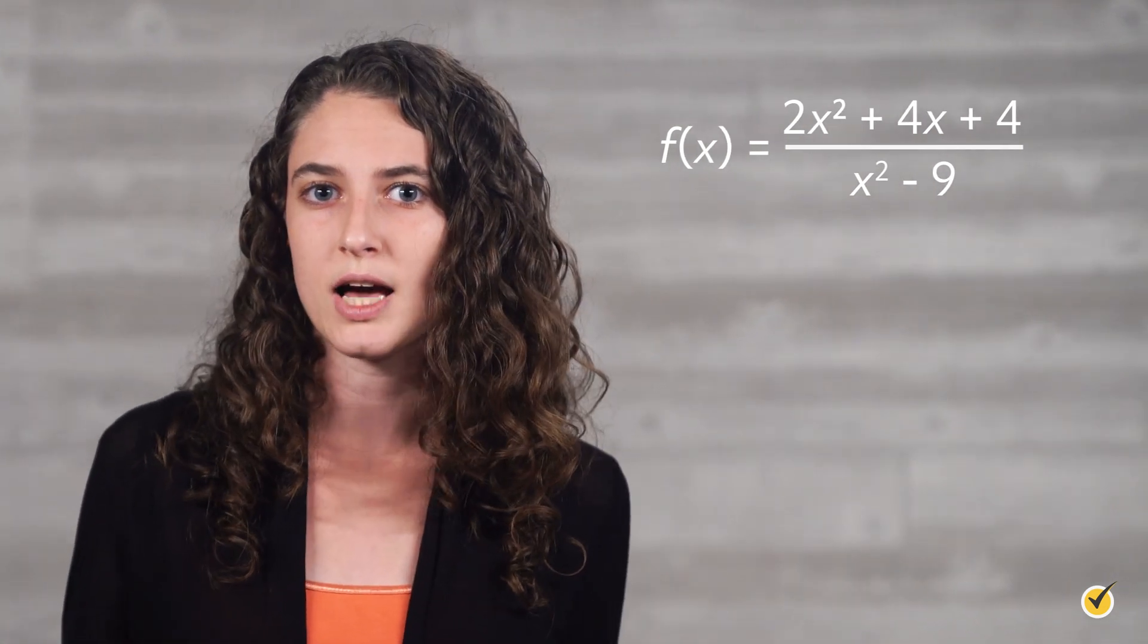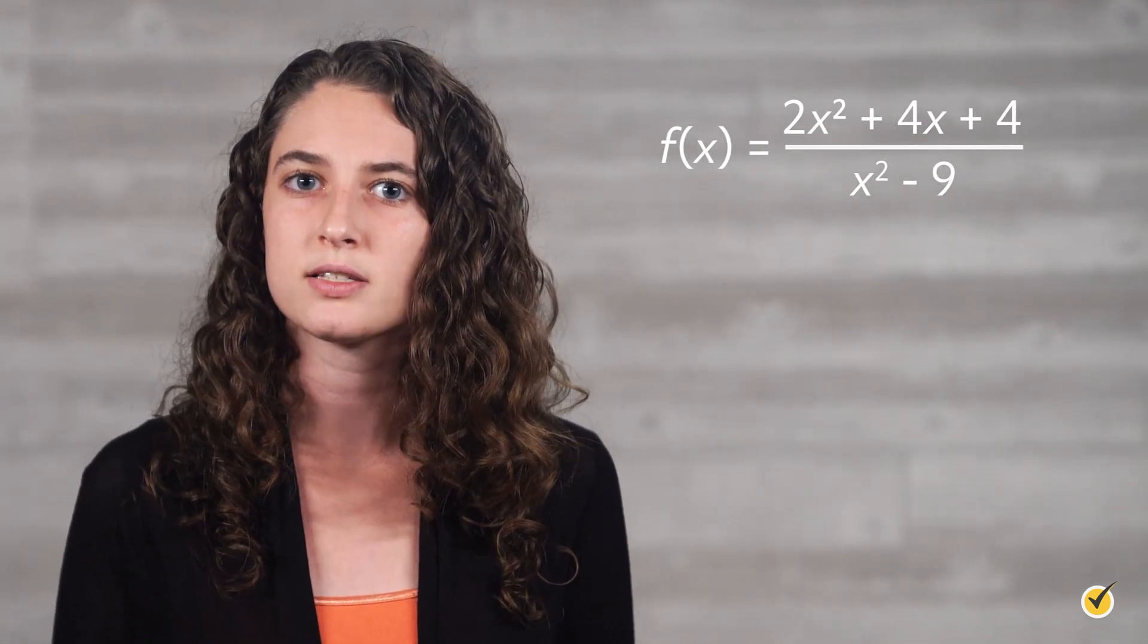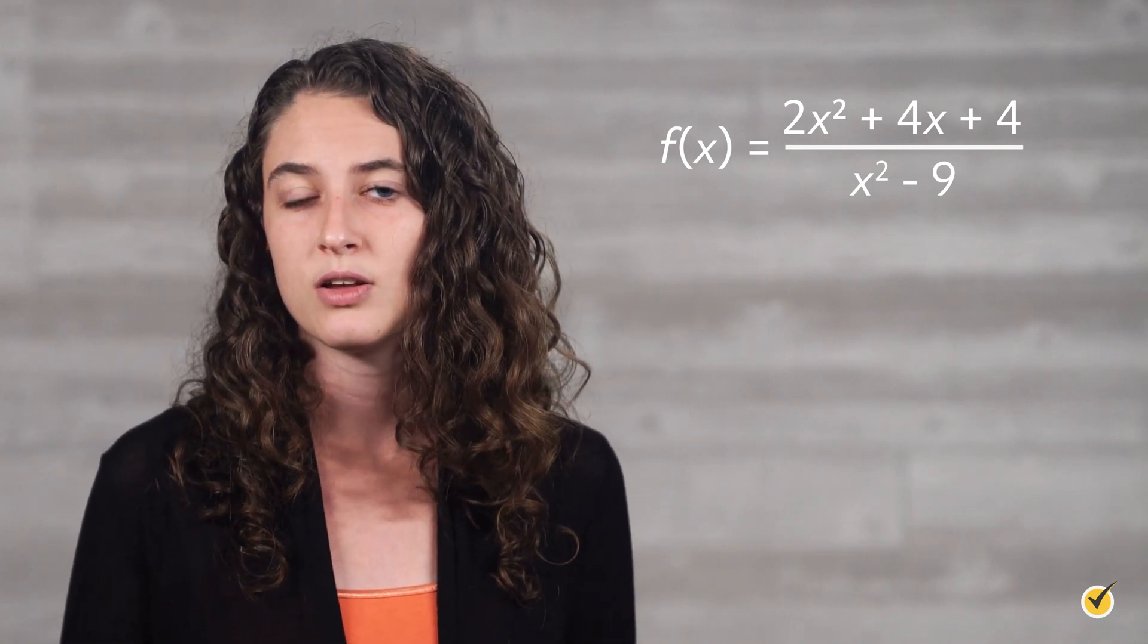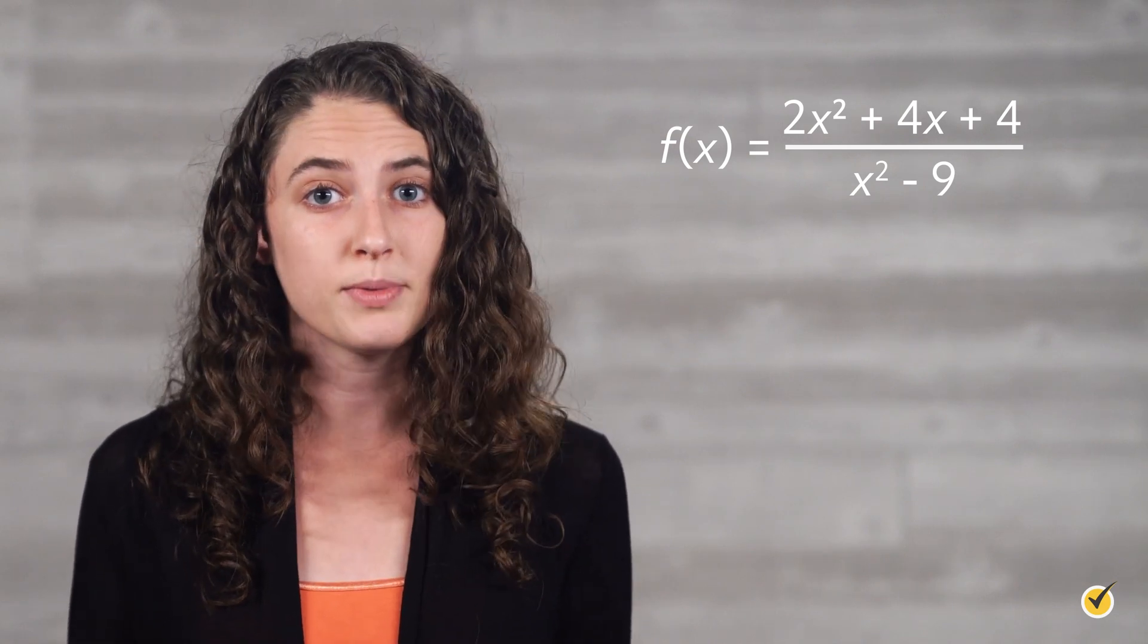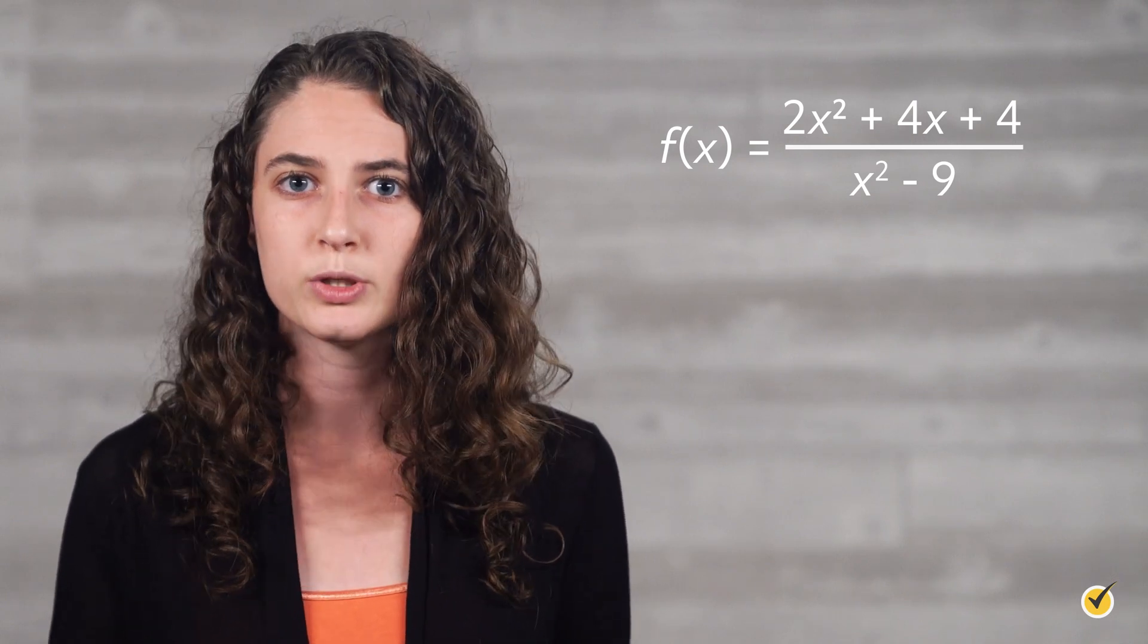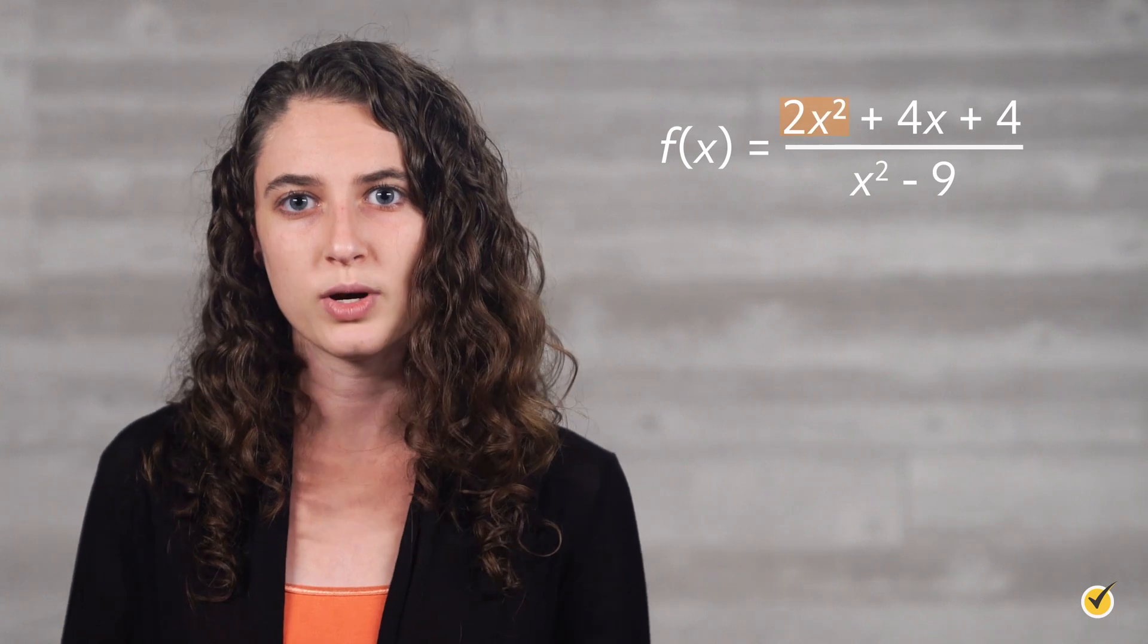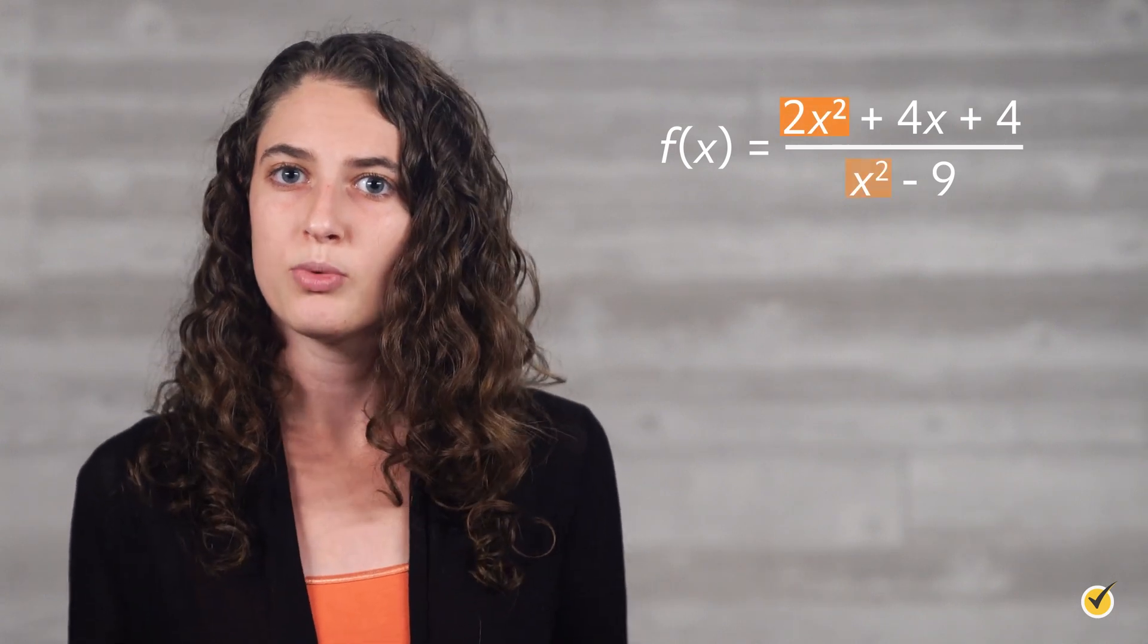As a first step for these kinds of problems, you'll need to determine what is the highest power of x in the numerator, and what is the highest power of x in the denominator. Let's try out an example. Find any horizontal asymptotes of the function f of x equals 2x squared plus 4x plus 4 over x squared minus 9. We need to determine which term has the highest power on top, and which term has the highest power on the bottom. From the numerator, we have 2x squared, and from the denominator, we have x squared.